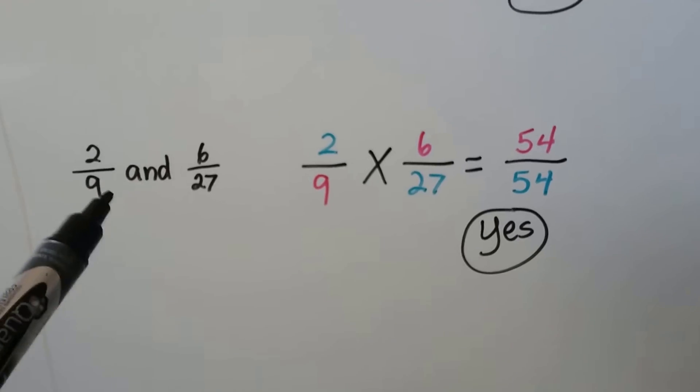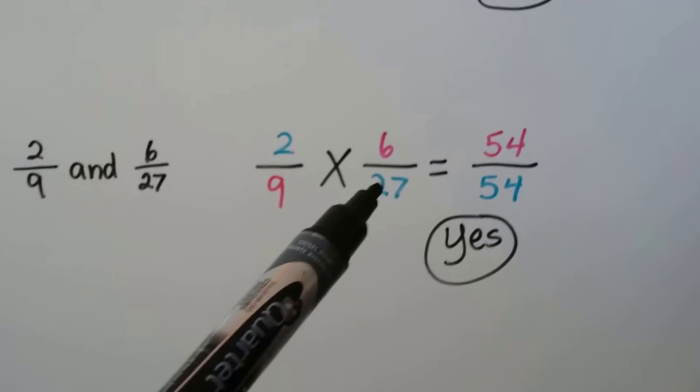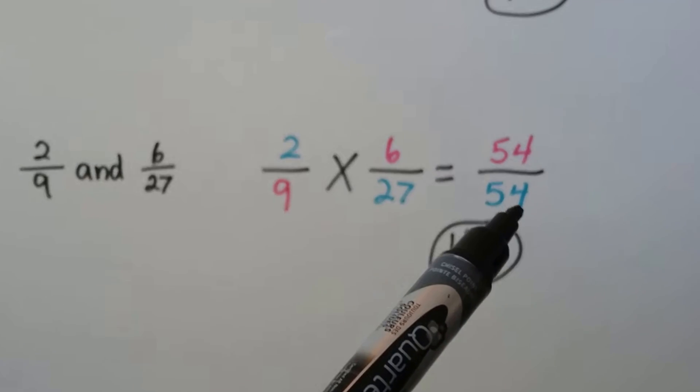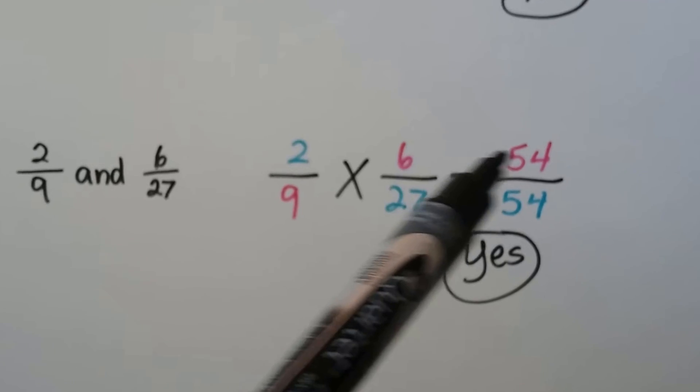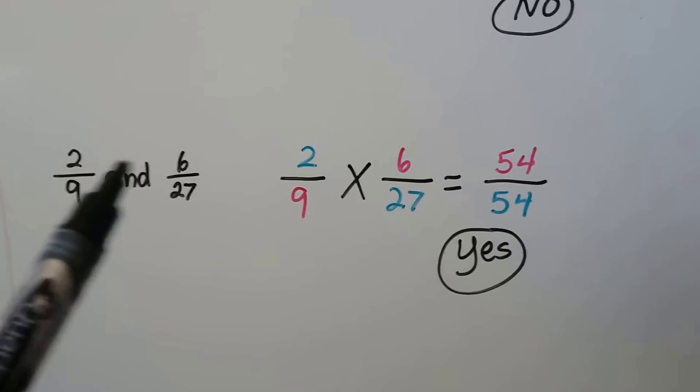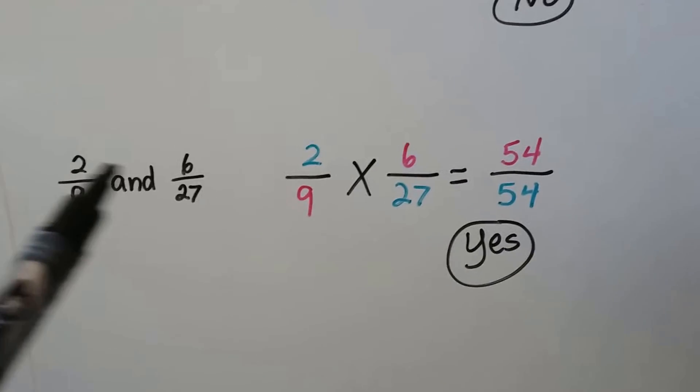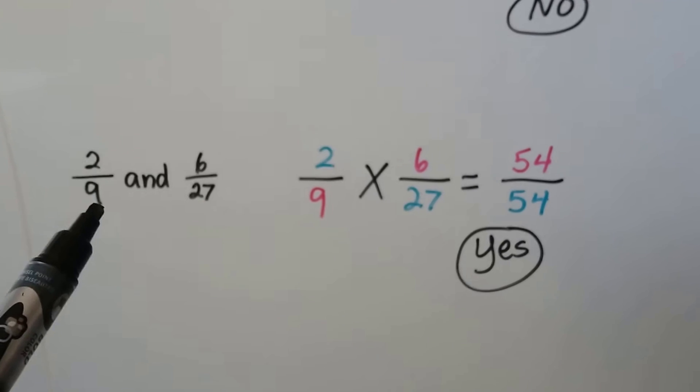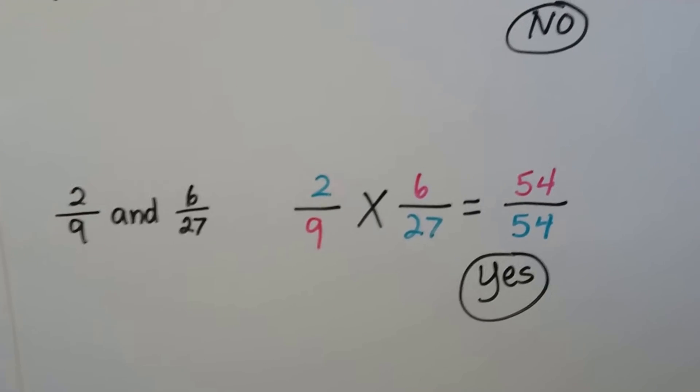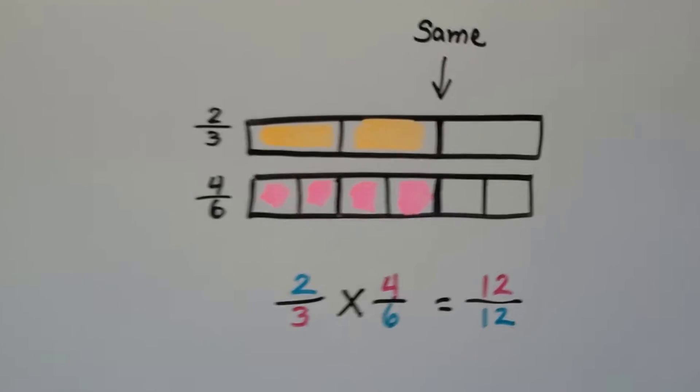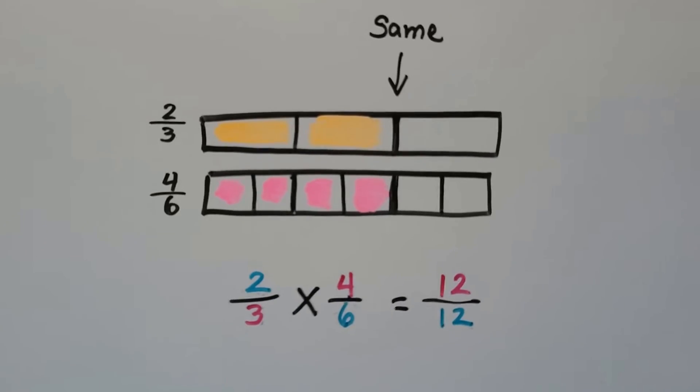We have two-ninths and six-twenty-sevenths. Two times twenty-seven is fifty-four, and nine times six is fifty-four. So yes, these both represent the same amount. They might be split up differently, but it's the same amount and they're equivalent fractions.